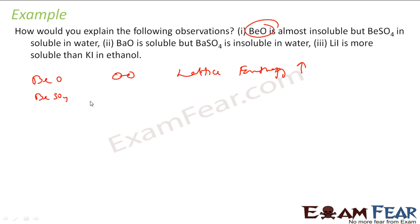But if you take BeSO4, this Be is small, SO4 is big. They are not stable in the same way. So the lattice enthalpy is low. Since it has low lattice enthalpy, the hydration enthalpy when you mix with water will compensate this lattice enthalpy. Let's suppose this is 5, this is 2, just giving numbers. So hydration enthalpy will take care of this and it will be soluble.